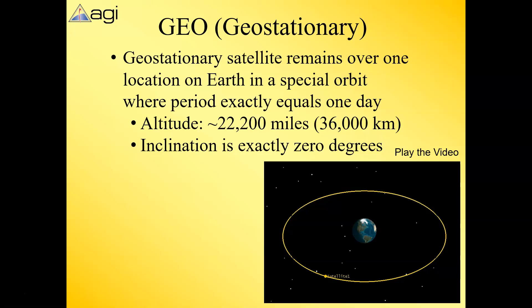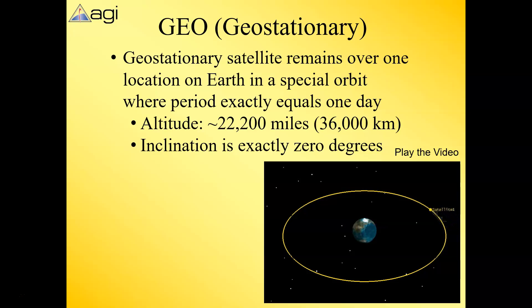Next we'll take a closer look at geostationary. A lot of people use the term geosynchronous — one special thing about geosynchronous orbits is that they follow the Sun. As you watch the video in the lower right, you can see the earth spin and the satellite essentially follows that point above earth. The altitude has to be constant, as circular as possible, at about 22,200 miles. Ideally the inclination would be exactly zero, though in practice that's very hard to achieve.